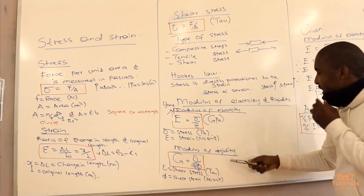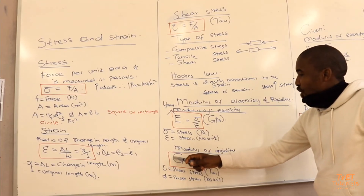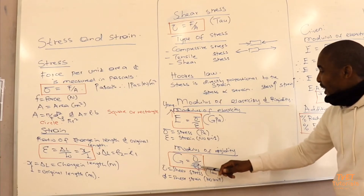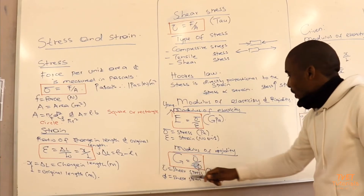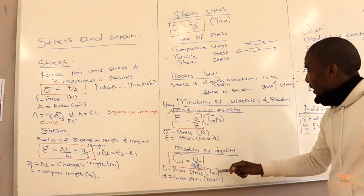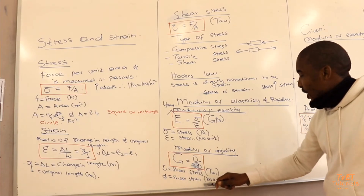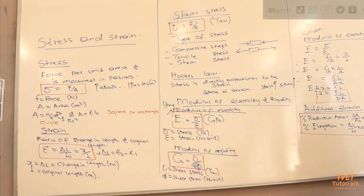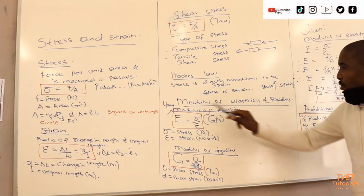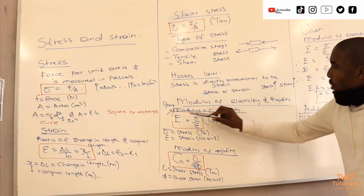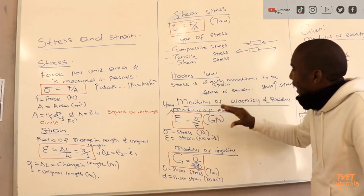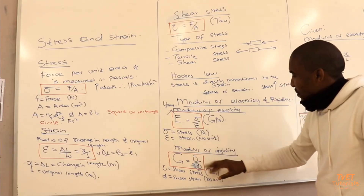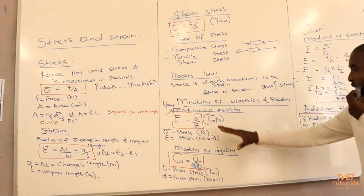The modulus of rigidity, represented by G, is the shear stress divided by the shear strain. The shear stress is measured in tau, and the shear strain does not have a unit because the meters cancel. So we have modulus of elasticity, which determines the limit of proportionality, and modulus of rigidity.